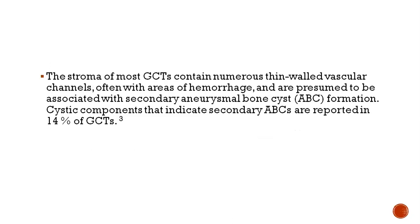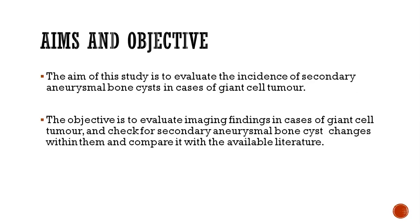The stroma of the GCT contains numerous thin-walled vascular channels, often with areas of hemorrhage, and are presumed to be in association with secondary aneurysmal bone cysts, or ABC, formation. Cystic components that indicate a secondary ABC may be reported in up to 14% of GCT — not very common.